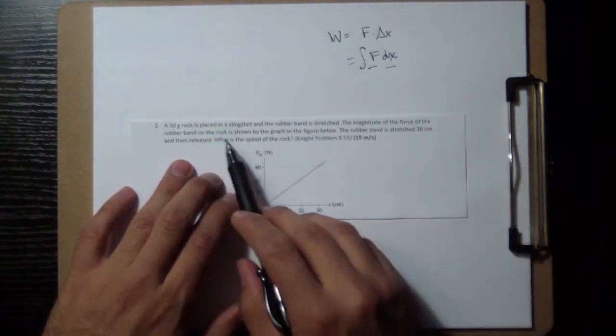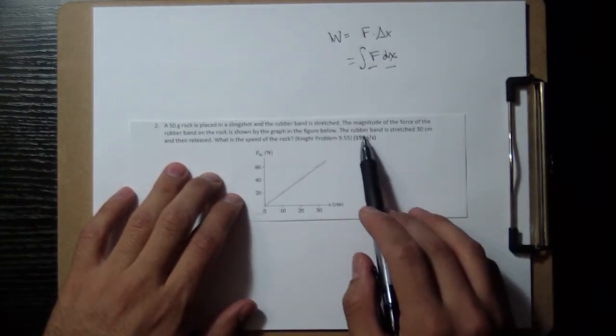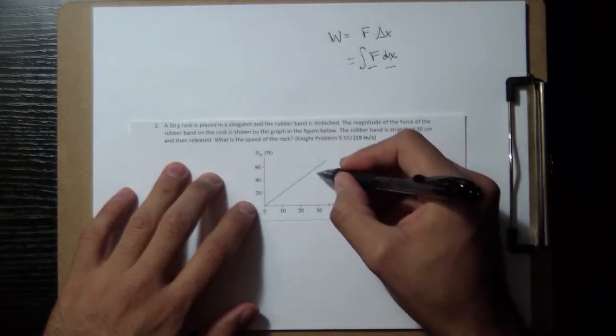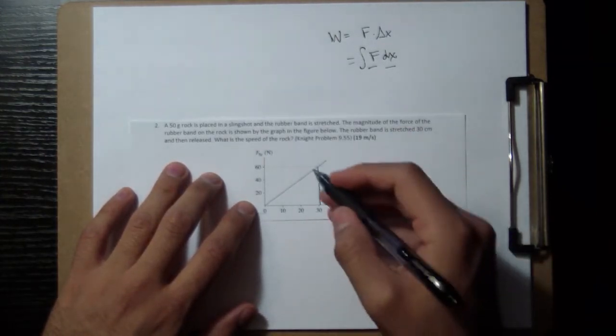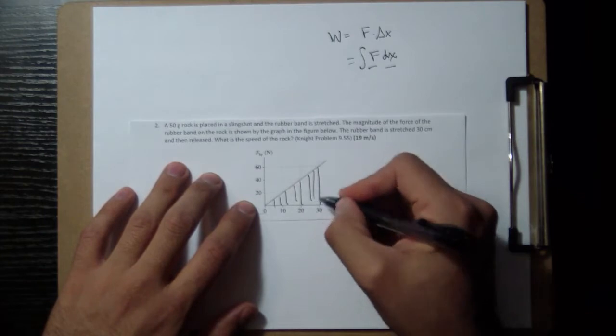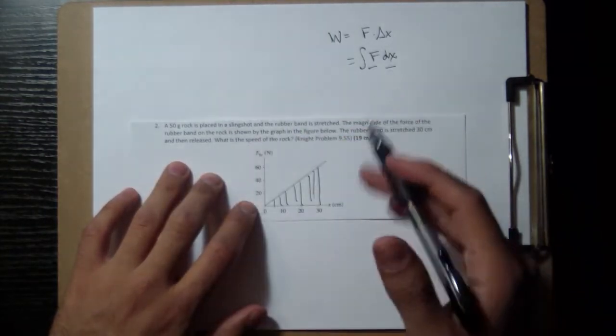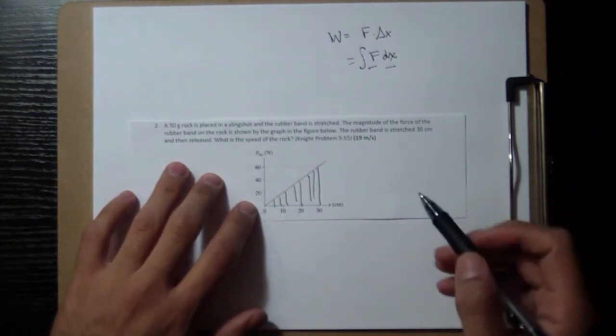So this rubber band is stretched, it starts at 30 centimeters. We want to know what the area under here is, that's going to give us the work that's put into the rubber band. Then that energy is going to go, once it's released, all into the kinetic energy.